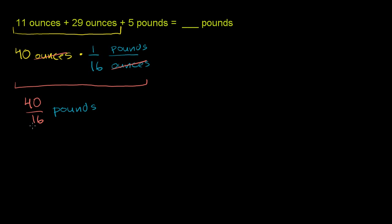Let's see if we can simplify this. Both numbers are divisible by 8. If you divide 40 by 8, you get 5. Divide 16 by 8, you get 2. So it's 5 halves. Let's write this as a decimal.